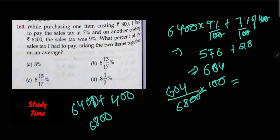604 divided by 68. The answer is 15 by 17. Option C.